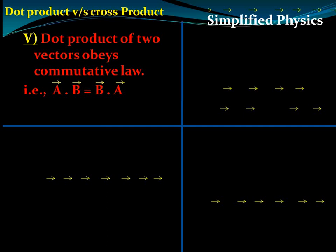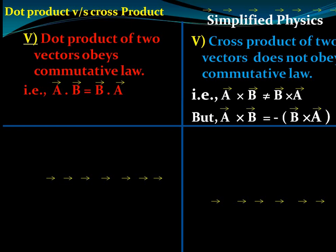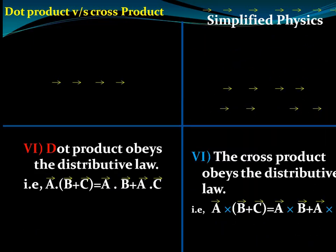The dot product obeys the commutative law: a·b = b·a. However, the cross product does not obey the commutative law because the direction of a×b is exactly opposite to b×a. Both the dot product and cross product obey the distributive law: a·(b+c) = a·b + a·c, and similarly for cross product.